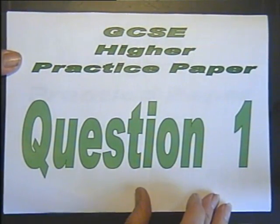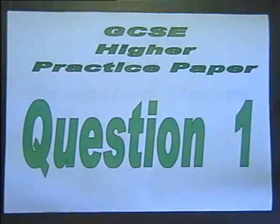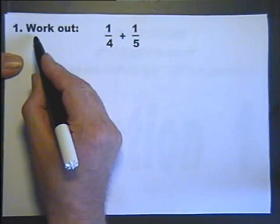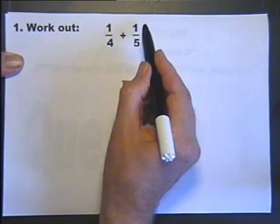Higher Practice Examination Paper 1A, Question 1. Work out a quarter adding to a fifth.